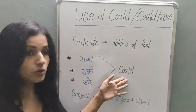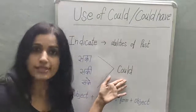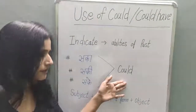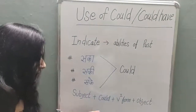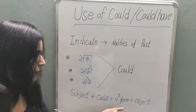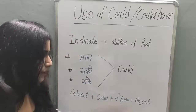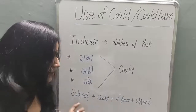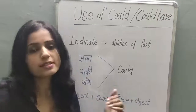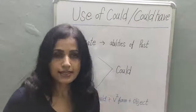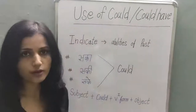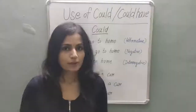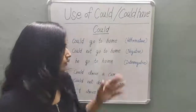When you create a sentence with 'could', the structure is: Subject + could + verb 1st form + object. Using this structure, you can create a sentence with 'could'. First of all, I will tell you about 'could'.